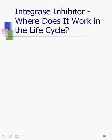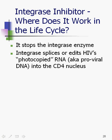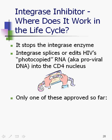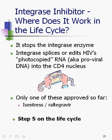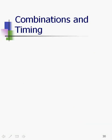Finally, the integrase inhibitor. It stops the integrase enzyme — the enzyme that edits HIV's photocopied RNA, that is proviral DNA, into the CD4 nucleus. Think of it as the film editing software. We only have one integrase inhibitor so far: Isentress. It works in step five of the life cycle — integration — where the HIV DNA, also known as proviral DNA, gets spliced right into the middle of the CD4 nucleus. Next up, we're going to talk about combinations and timing.